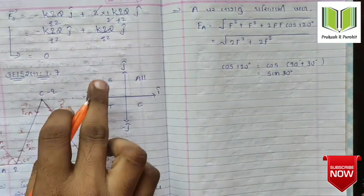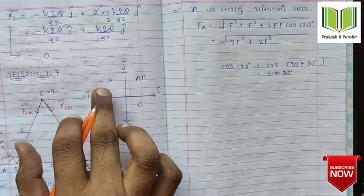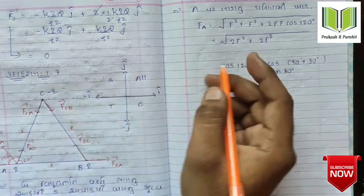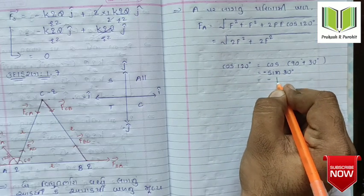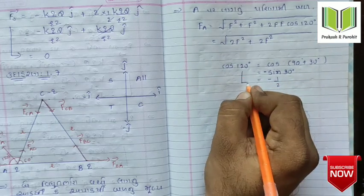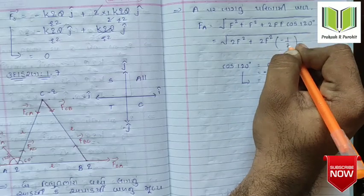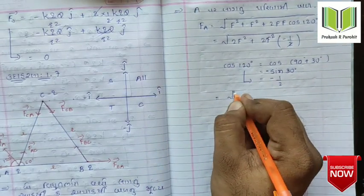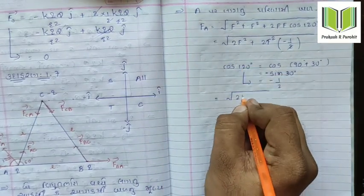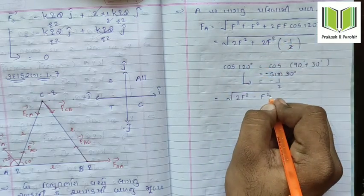Cos 130 is equal to sine. Cos 180 is equal to sine. Cos 80 is equal to 1 by 2 plus 20. So minus 2, minus 1 by 2 gives us the value.